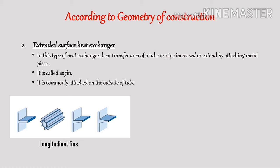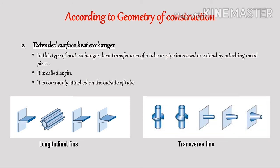The second type of fin is the transverse fin, where long metal pieces are attached to the outside of the pipe at right angles to the axis of the tube. It is used when the direction of flow is across or at right angles to the tube. This type of fin is used for cooling or heating of large quantities of gases.